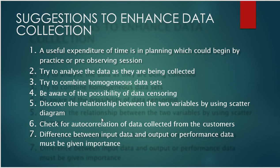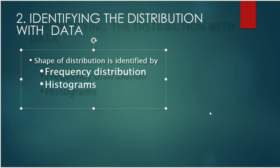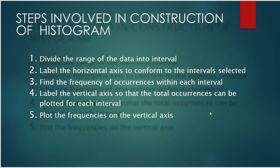That concludes step one — how to collect data — with seven suggestions for important points while collecting data. Once the data is collected from the real system, the next step is to choose a distribution. So how to identify the distribution? Identifying the distribution with data is done through two steps: first, frequency distribution; second, histogram. These two steps are required to identify the distribution with the data.